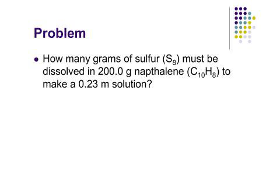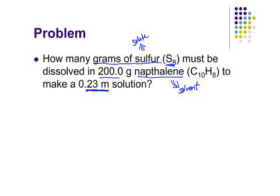Let's go on to another problem to make sure we're really comfortable with molality calculations. This one is a little different. The question asks: how many grams of sulfur — this allotrope of sulfur has eight sulfur atoms per molecule, S₈ — must be dissolved in 200 grams of naphthalene, chemical formula C₁₀H₈, to make a 0.23 molal solution? Sulfur is the solute, so we care about its molar mass. Naphthalene is the solvent, so we don't need its molar mass.